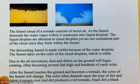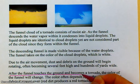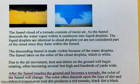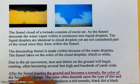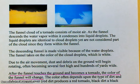After the funnel touches the ground, it becomes officially a tornado. If it's just dipping below the cloud and rotating without touching the ground, we typically call it a funnel cloud. The color of the funnel will change when it touches ground because the color depends on the type of dirt and debris it's moving over. Red dirt gives it a red appearance, black dirt gives it a black appearance, and so on.